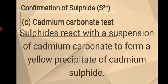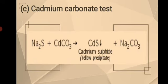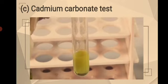For the third test for the confirmation of sulfide, which is the cadmium carbonate test: based on the theory from olabs.com, sulfides react with a suspension of cadmium carbonate to form a yellow precipitate of cadmium sulfide. In the experiment, after adding a suspension of cadmium carbonate in water to a portion of the aqueous solution of salt, a yellow precipitate was formed. It was concluded that the yellow precipitate was cadmium sulfide (CdS), confirming the presence of sulfide anion. The result shows a yellow precipitate at the bottom of the test tube.